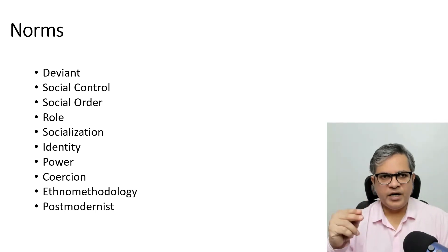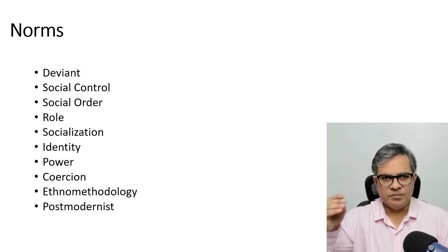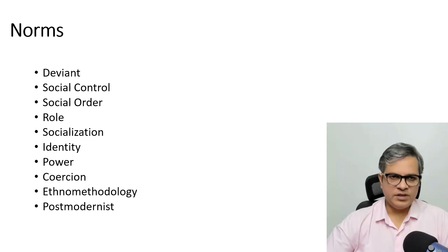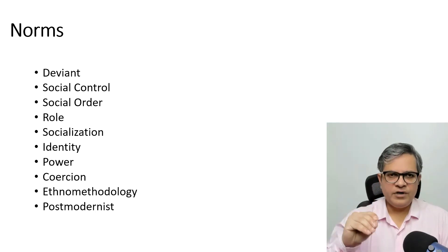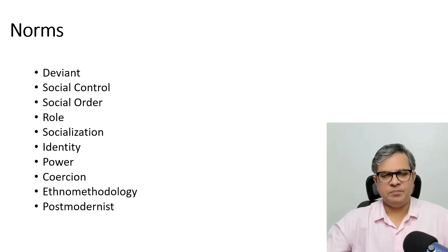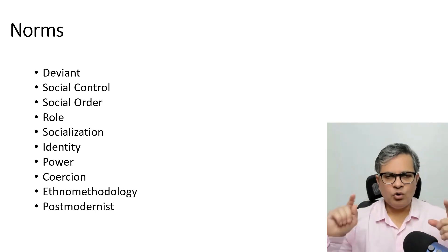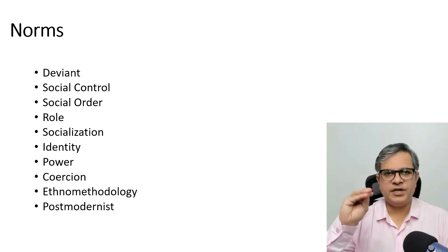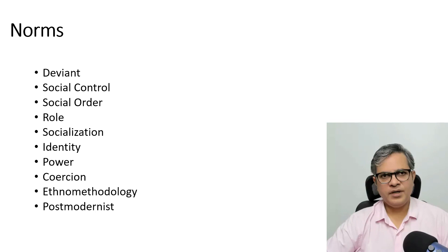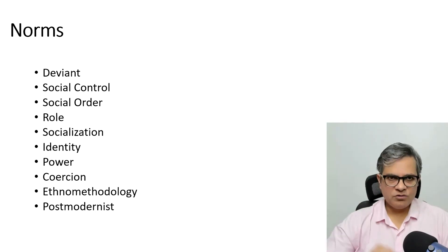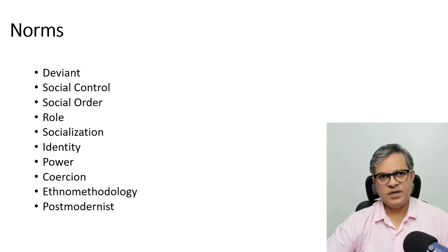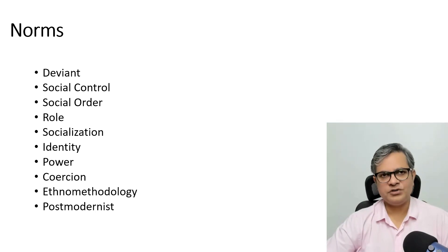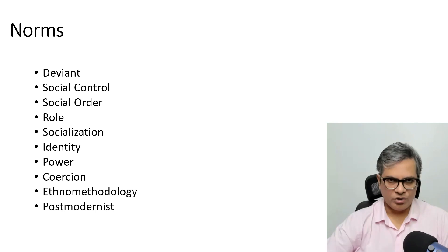The deviants are not welcome in a certain manner — they are given a social example by open punishment, and this is coercion. How we study about norms through ethnomethodology and through postmodernist approaches — these are some popular methodologies. When we will be studying about methodology again, we would be studying about norms, and when we would be studying about sociological thinkers, we will be coming back to norms with respect to each sociological thinker.